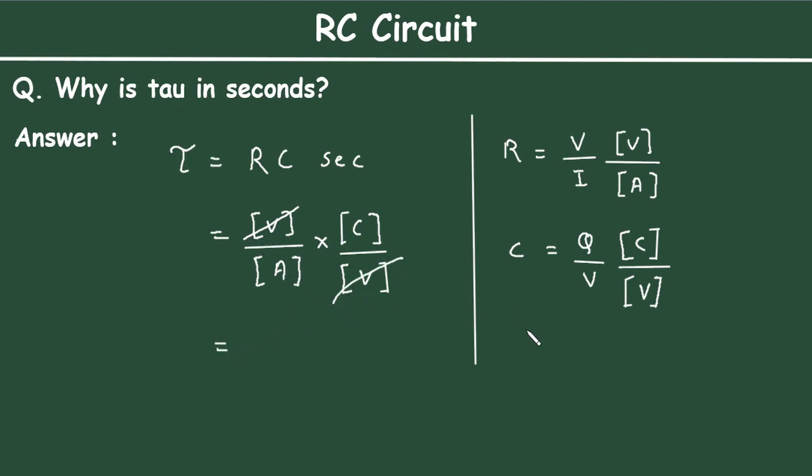Here we see ampere is the unit of current. Current I equals charge divided by time. The unit of charge is Coulomb [C], and the unit of time is seconds [s].